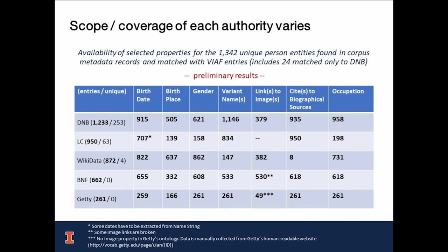Properties of Wikidata and Getty were collected by SPARQL queries. For BNF, we used BNF RDF files in JSON and JSON-LD for analysis. We noticed that only 334 entities have explicit birthdate properties in LC; however, an additional 373 named entities in LC include birthdates in the name string. This table shows that for our corpus, DNB, with the highest number of entries and unique entries, might be the best source to find information about name entities.